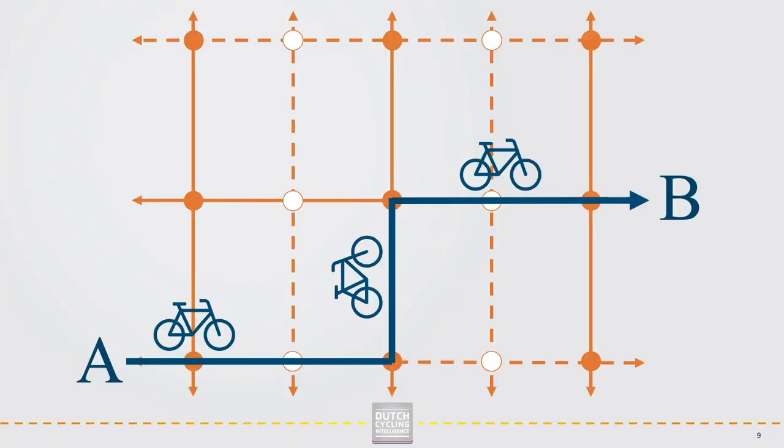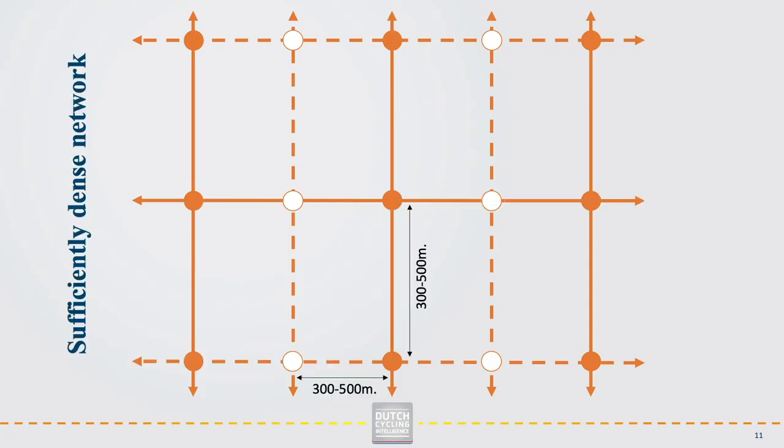First about distance. Short routes between origins and destinations can be created at the network level by providing a connected and sufficiently dense bicycle network.